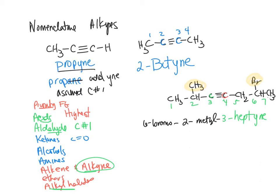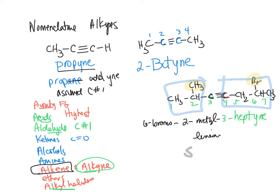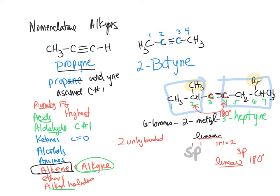Do we have to worry about cis and trans? No — we only worry about cis and trans with alkenes, because alkynes are linear. The hybridization of the alkyne carbons: each carbon is bonded to two things, so it's SP hybridized. SP gives a linear shape with groups 180 degrees apart. That leaves each carbon with two unhybridized P orbitals.